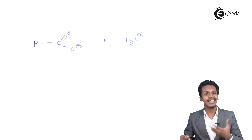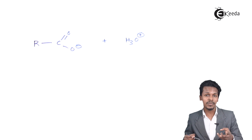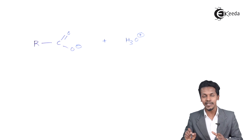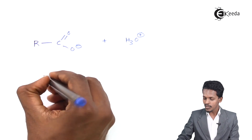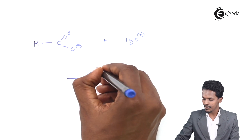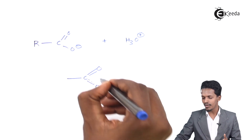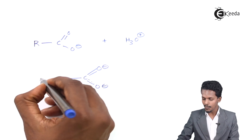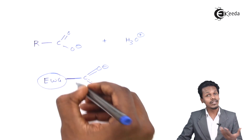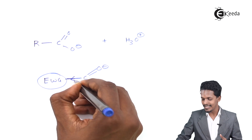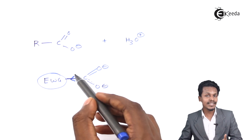If the carboxylate ion is more stable, the H⁺ ion will be removed very easily. Now, suppose electron withdrawing and electron donating groups are attached to this carboxylate ion. If we consider the carboxylate ion — the negative charge can come to either oxygen. If an electron withdrawing group is attached to this carboxylate group, the negative charge will move towards the electron withdrawing group, thereby stabilizing the carboxylate ion.